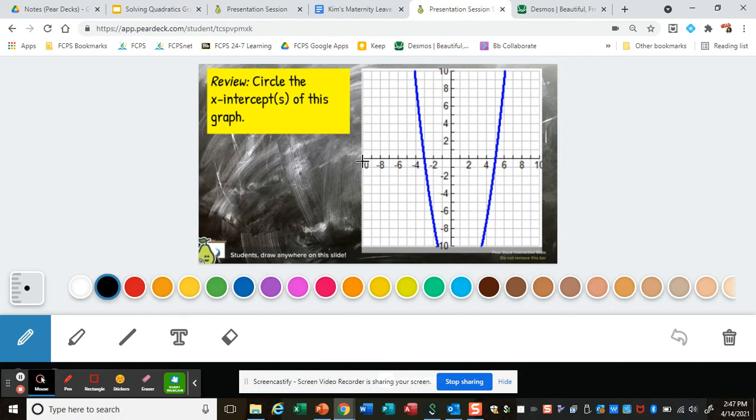We're going to circle the x-intercepts for this one. Here's the x-axis, here's our graph. It crosses over here and here.